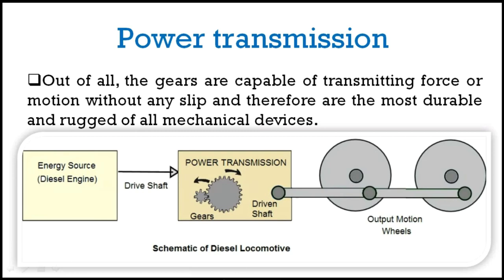If we look at a figure, the prime mover is a diesel engine where the power is produced. The driving shaft of the diesel engine — the crankshaft — is connected to an output device. Let us say the power-requiring device is a generator. The crankshaft of the IC engine is connected to the generator shaft by means of a power transmission drive, which in this case is a gear drive. When the shafts are very much closer to each other, gear drive is the best choice for power transmission, as it gives a positive drive.